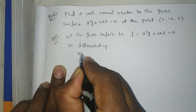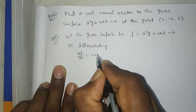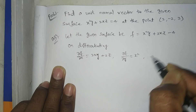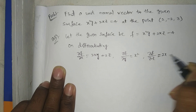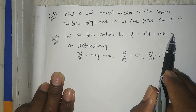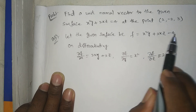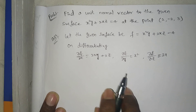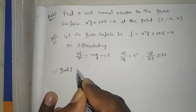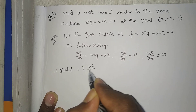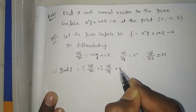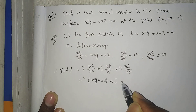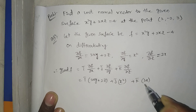On differentiating: dou F by dou x equals 2xy plus 2z, dou F by dou y equals x squared, dou F by dou z equals 2x. So the gradient del F equals i-bar dou F by dou x plus j-bar dou F by dou y plus k-bar dou F by dou z, which gives i-bar(2xy plus 2z) plus j-bar(x squared) plus k-bar(2x).